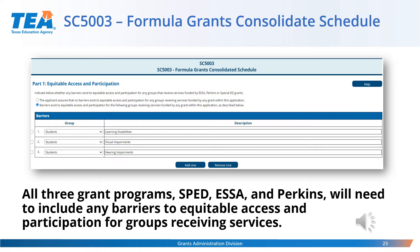When completing the SC5003, all three grant programs — SPED, ESSA, and Perkins — will need to include any barriers to equitable access and participation for groups receiving services. Be sure to allow the ESSA and Perkins grant program staff to complete this section before it is certified and submitted. It is acceptable to select no barriers.